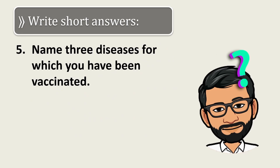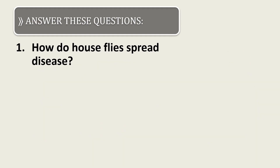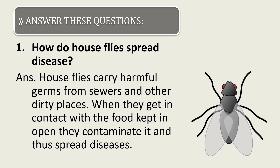Fifth question: name three diseases for which you have been vaccinated. Most of us in India have been vaccinated with BCG, which is against tuberculosis; HepB, which is against hepatitis B; and polio, which is against the polio virus.